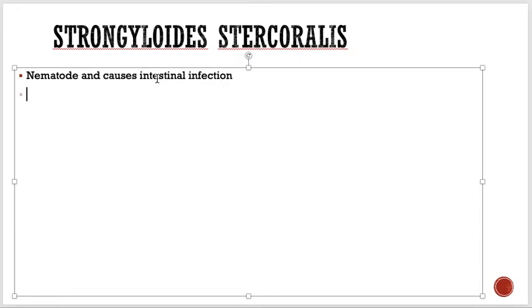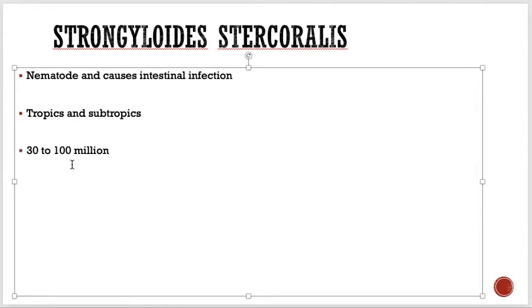The distribution of strongyloidiasis is widespread throughout the tropics and subtropical regions. The exact number of infected people is unknown, but it is estimated that 30 to 100 million people are infected. People living in developing countries are most affected, but because the world is more like a global village and traveling is very common, it can be present anywhere.